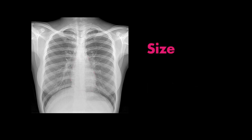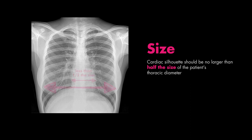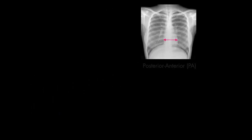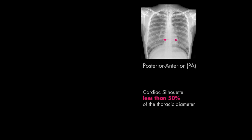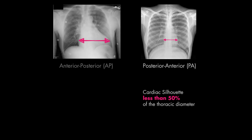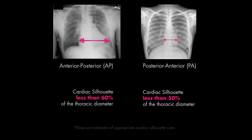The cardiac silhouette should be no larger than half the size of the patient's thoracic cavity. More specifically, on a PA film, the cardiac silhouette should be less than 50% of the chest diameter, and on an AP film, we will accept a cardiac silhouette less than 60%.